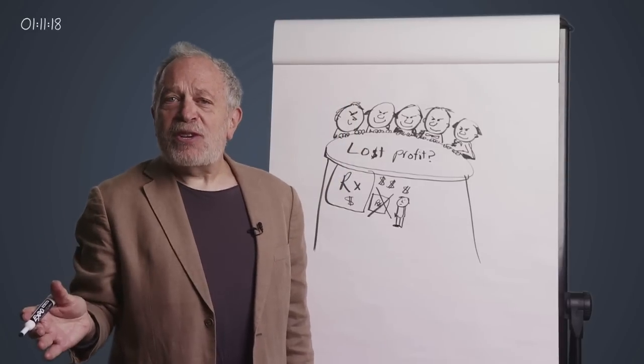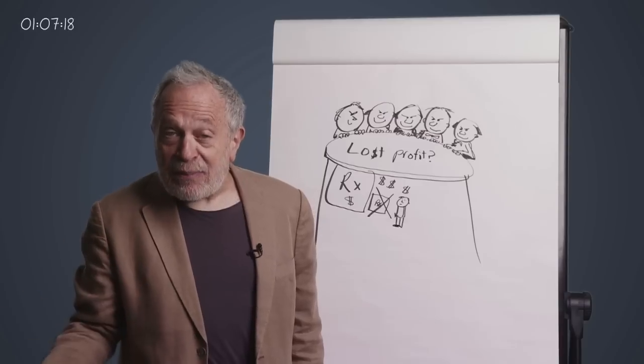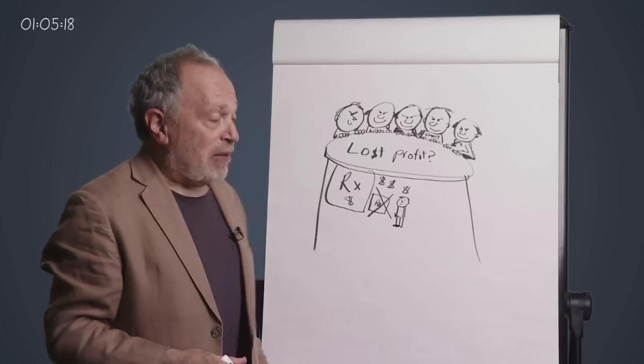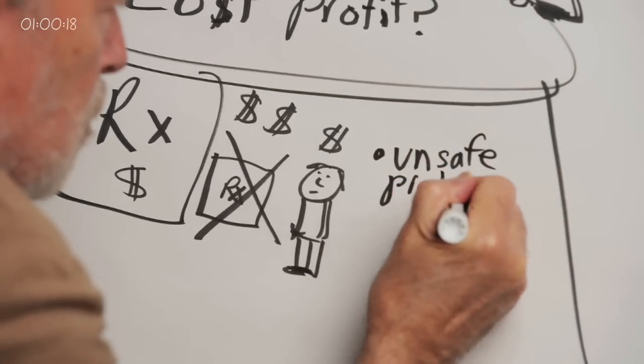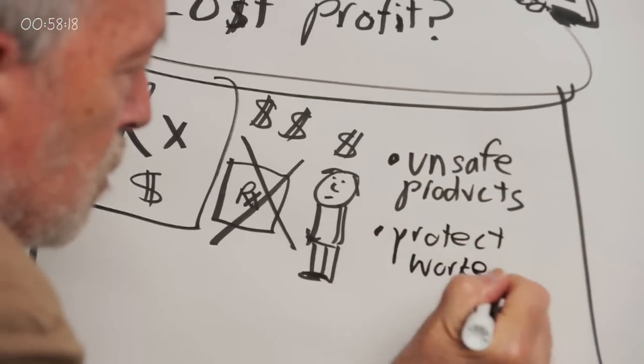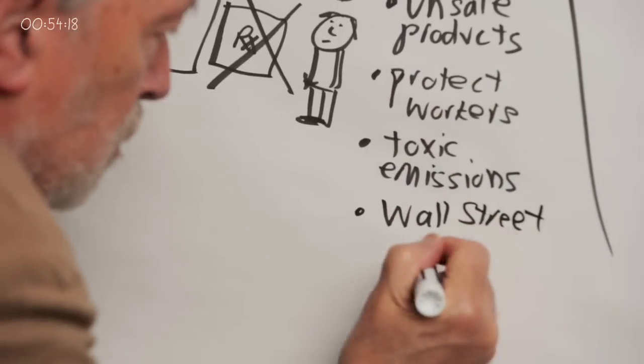That means even U.S.-based corporations could challenge any U.S. government regulation they claim unfairly diminishes their profits - laws that protect American consumers from unsafe products or unhealthy foods, that protect workers, block toxic emissions, or prevent another taxpayer-funded bailout of Wall Street.